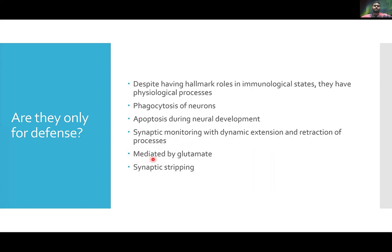This motility is mediated by glutamate. It has been shown that when microglial cells were given AMPA and kainate agonists, there was significantly more motility and more extension and retraction of processes. This was decreased or inhibited by GABA agonists — which makes sense, because glutamate is the excitatory neurotransmitter whereas GABA is inhibitory.